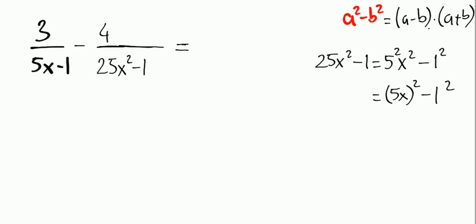So 5x can be written in parentheses as 5x squared minus 1 squared. It is written as a squared minus b squared. Finally, you say 5x minus 1 times 5x plus 1.